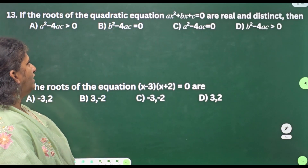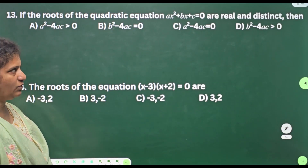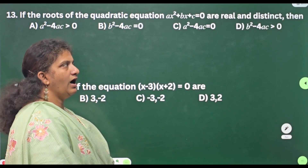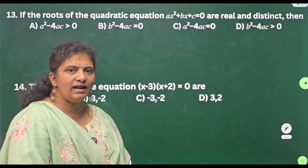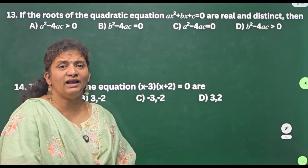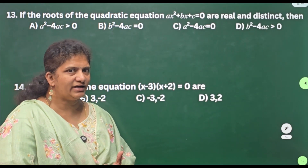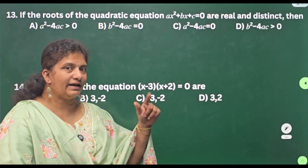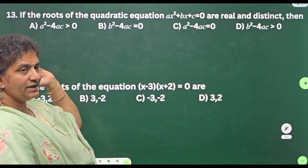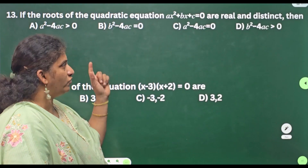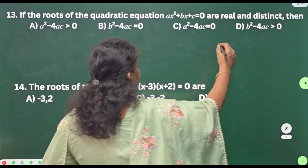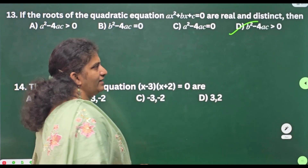Thirteenth one: if the roots of the quadratic equation ax² + bx + c are real and distinct — when do we get real and distinct? When the discriminant is greater than 0. Search for that option. Discriminant means b² − 4ac > 0. Option D is your answer.